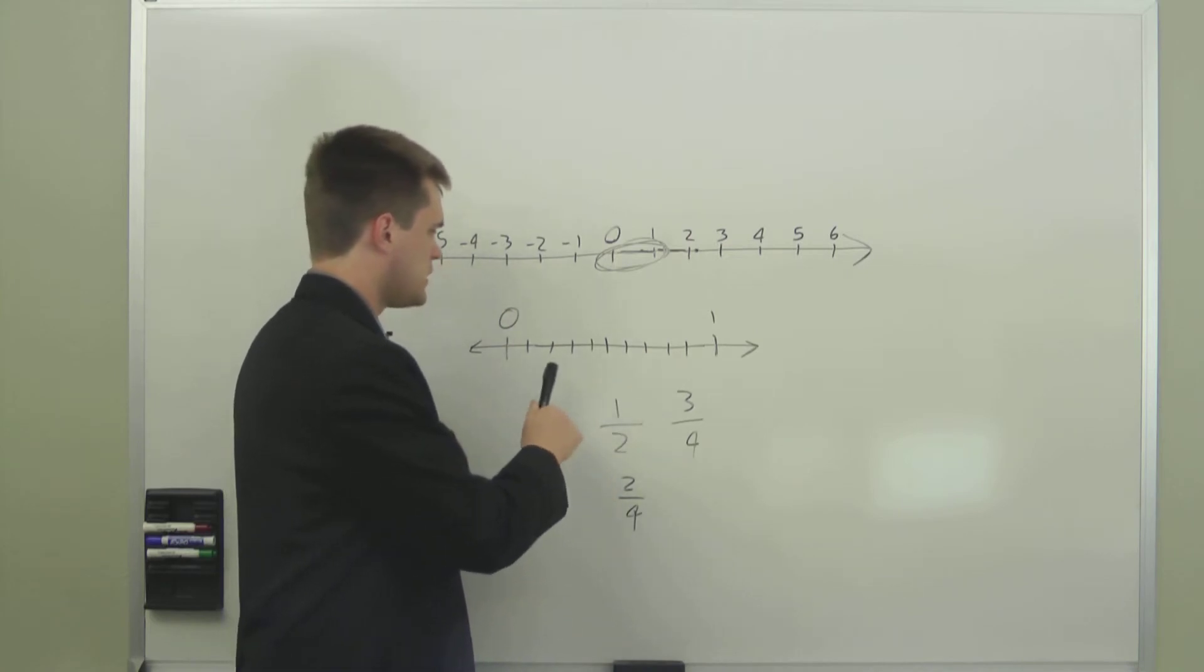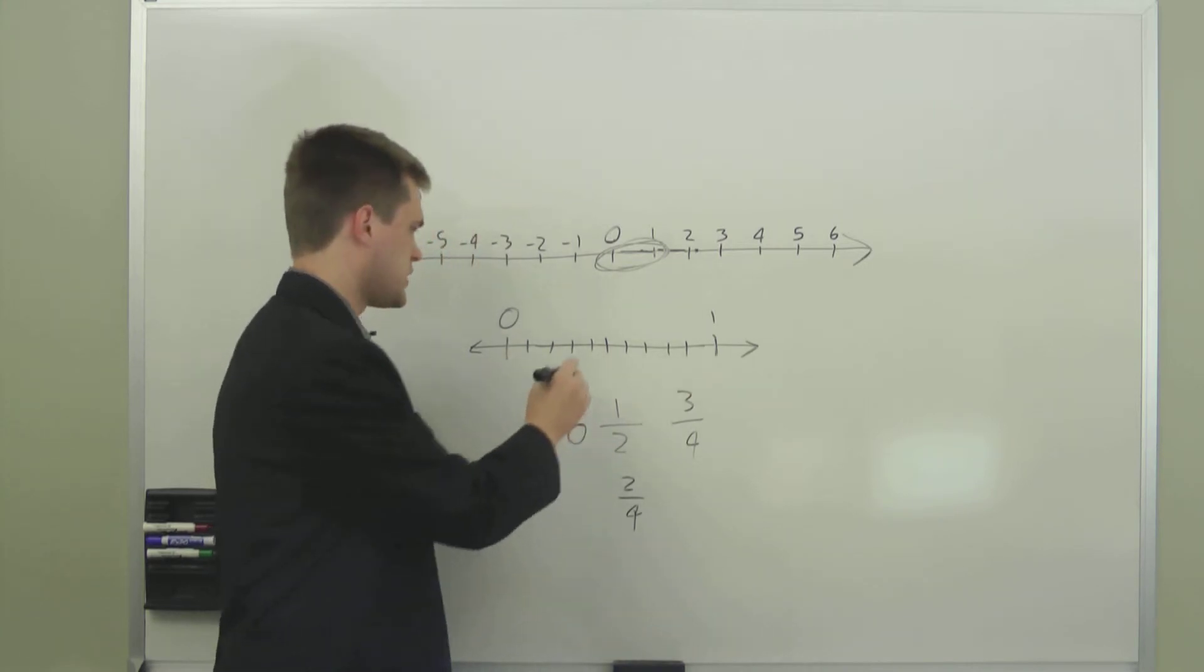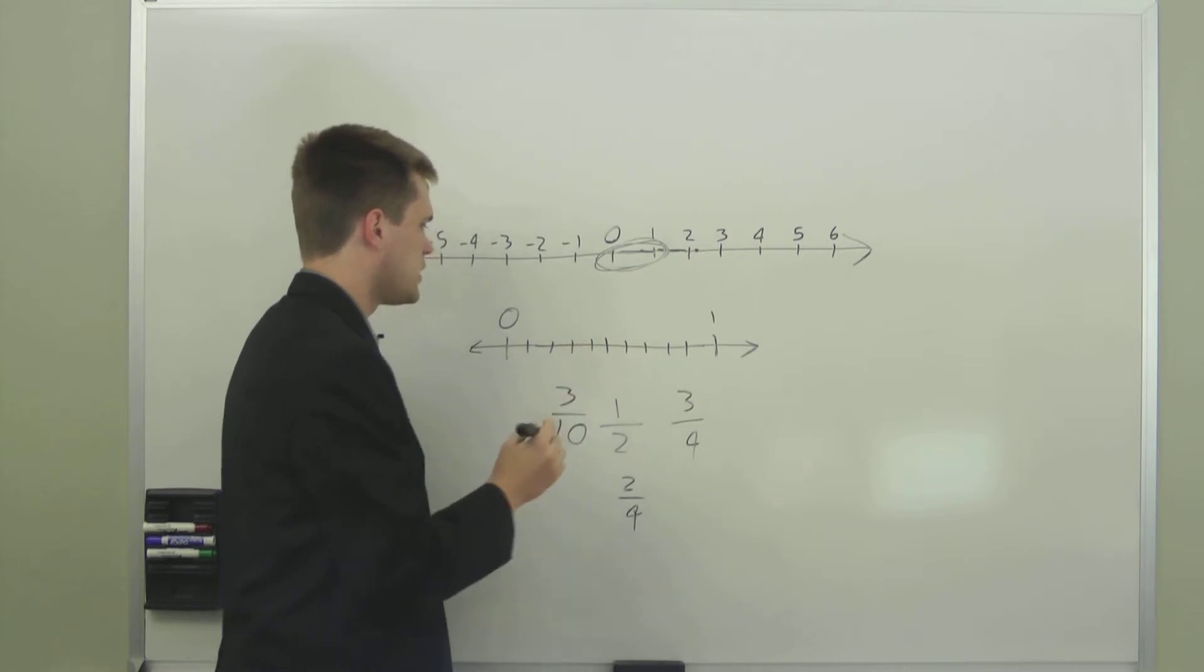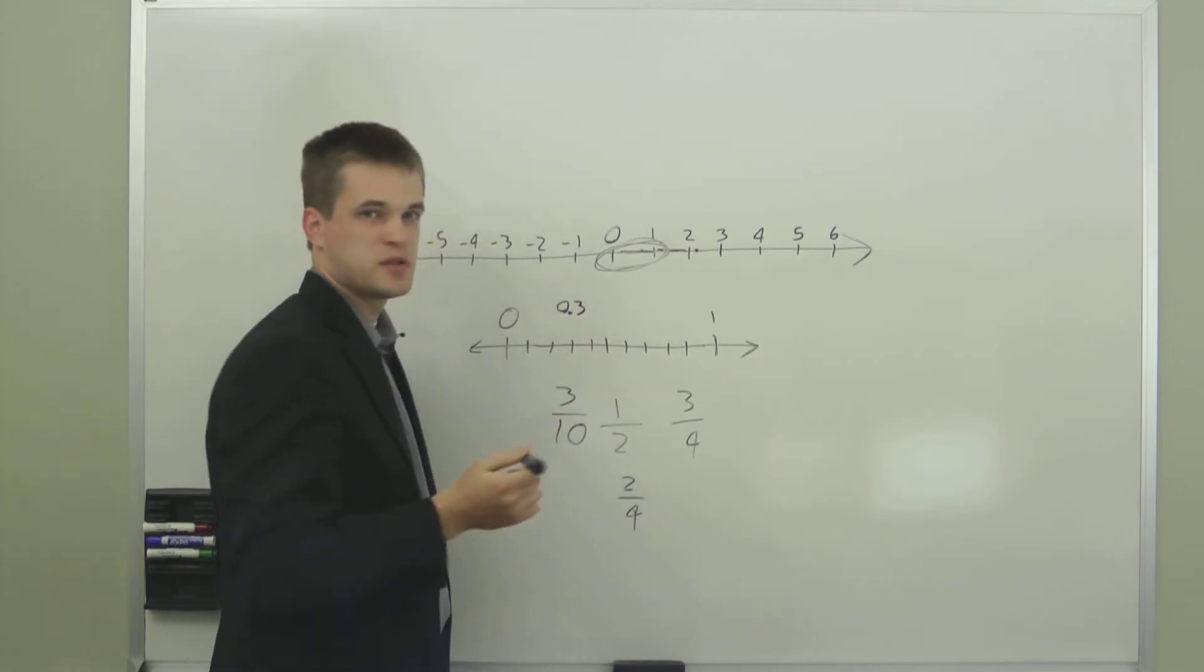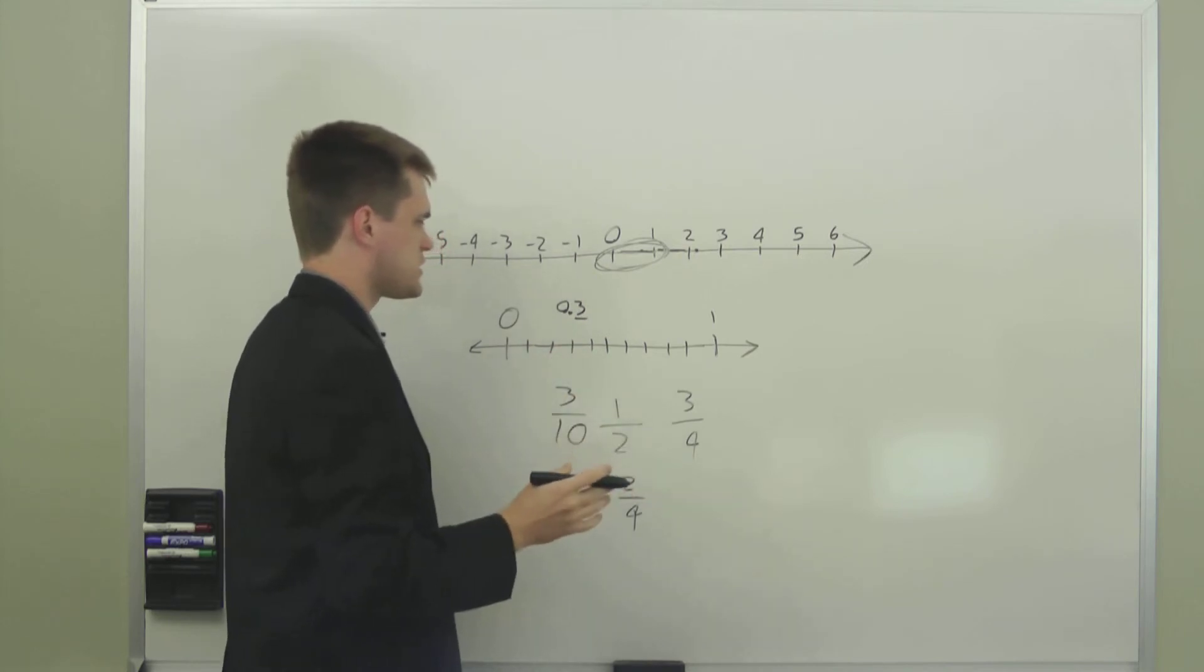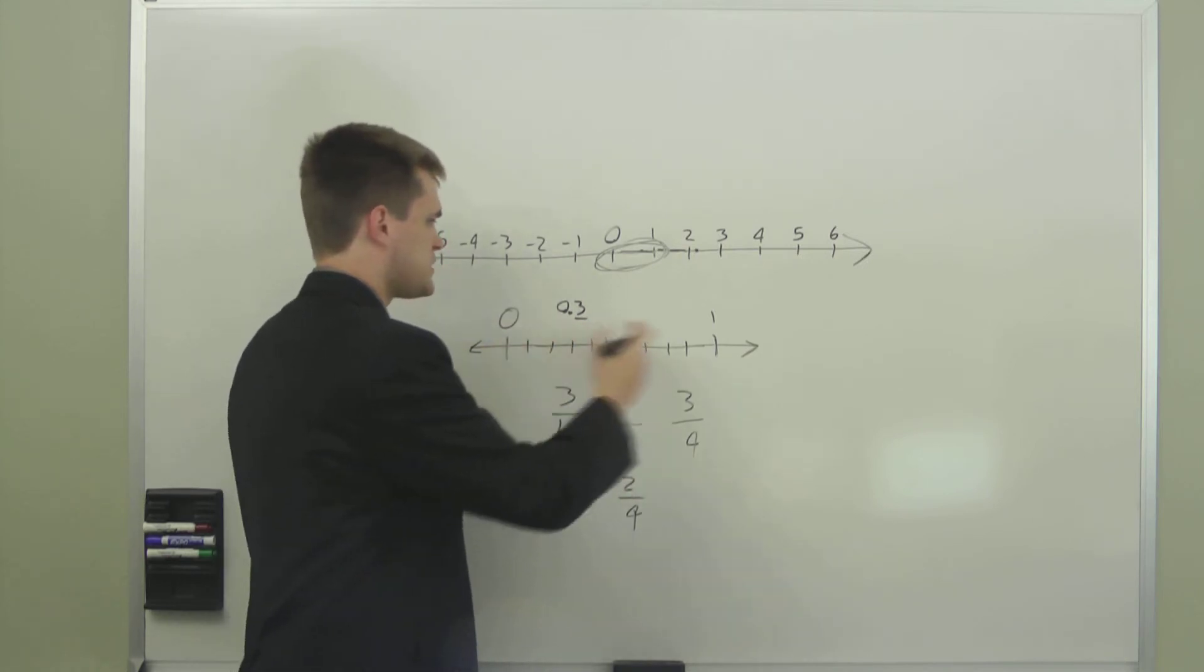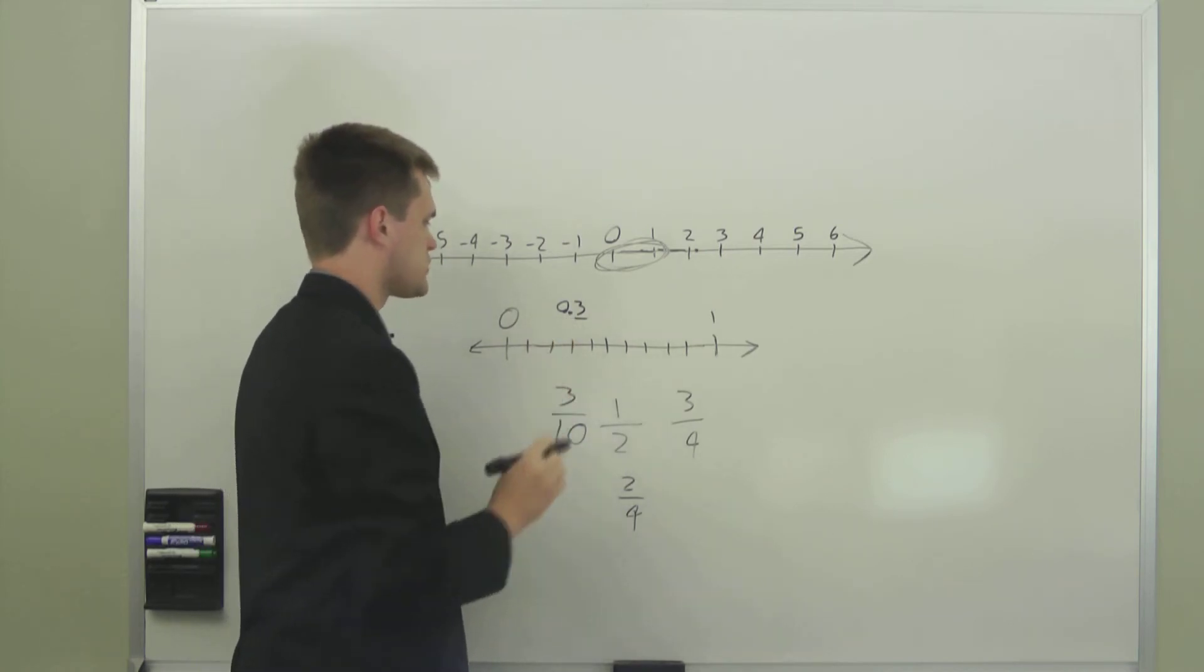With decimals, though, instead of saying, for instance, instead of writing this as three-tenths, which is a valid way to write this particular point as a fraction, you would write this as 0.3. Because we use the decimal system, every number place to the right of the decimal means you've divided up this space between the two integers into ten equal parts, and this is how many of the parts we're talking about.